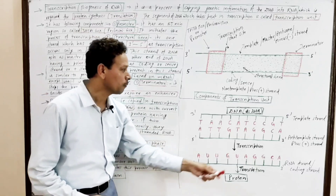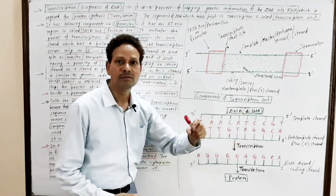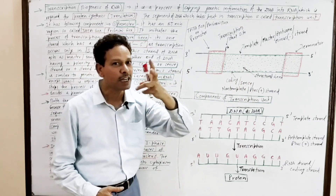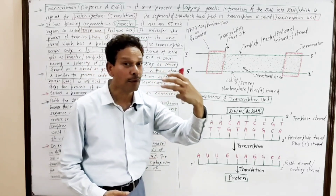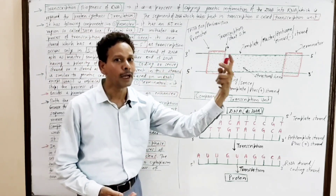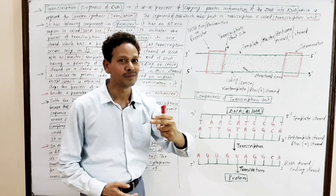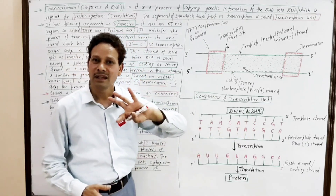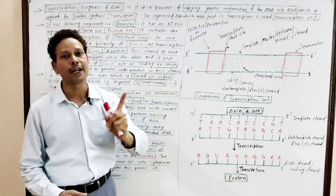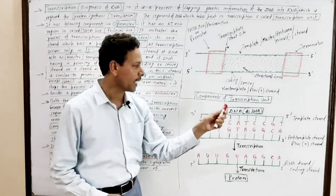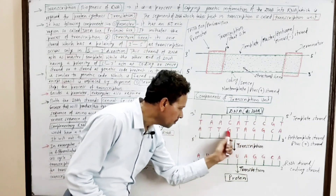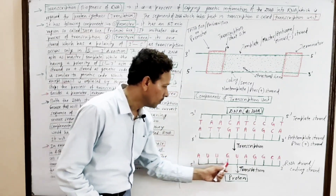Also, if this double-stranded DNA produced two strands of RNA that are complementary to each other, they would have a tendency to form double-stranded RNA due to complementary base pairing. And double-stranded RNA never undergoes translation, so it would never produce protein. Therefore, double-stranded DNA always produces a single-stranded mRNA, in which the entire information exists in one strand with polarity 5' to 3', resembling the definite sequence of nitrogen bases present on mRNA.